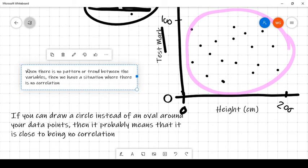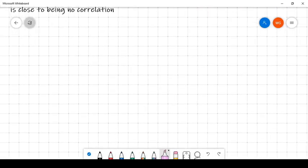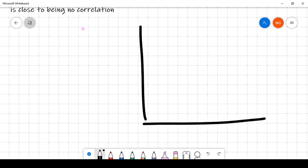I hope you found that helpful and remember there's three scenarios: positive correlation, negative correlation, and no correlation. Let me give you one more thing to think about. What if you had a graph that did this?